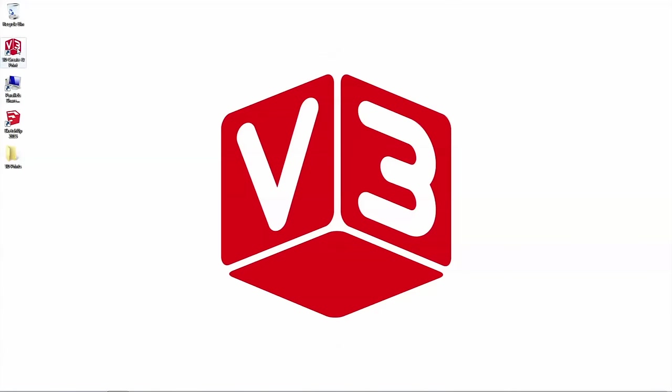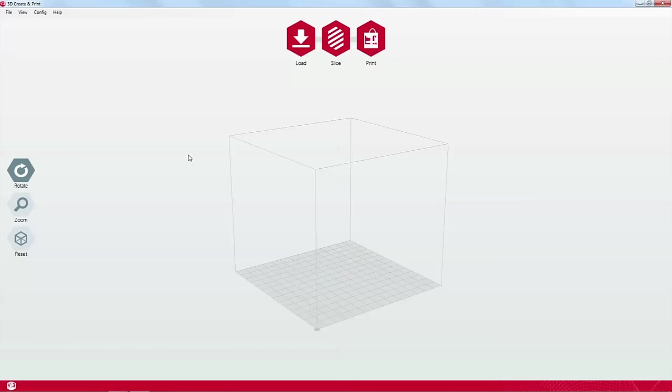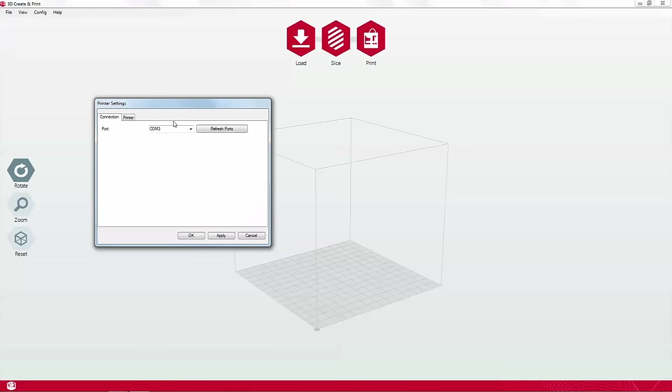Launch the 3D create and print software. A screen will appear showing the object control field, which is in effect a virtual representation of the printer's build area. Go to the config menu and select printer settings. If the port is showing in the drop down connection menu, then the printer is already connected. If the port is not showing, click refresh ports and it will appear. Click apply and then OK.